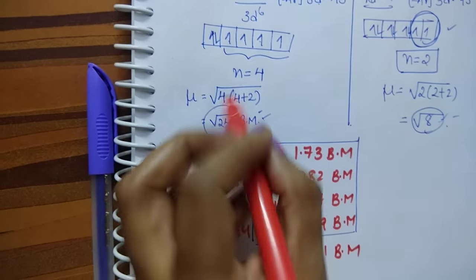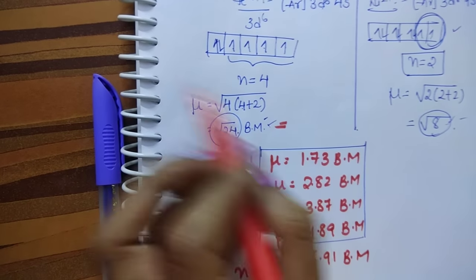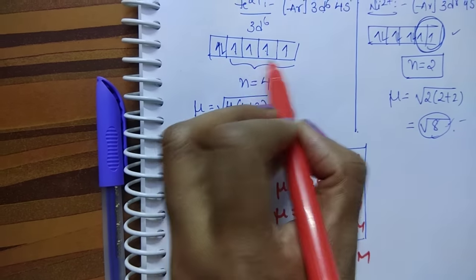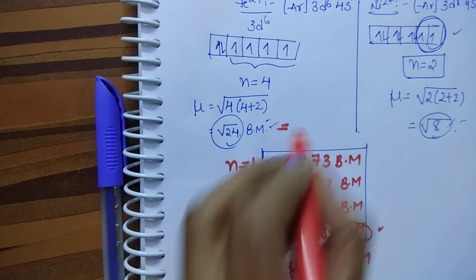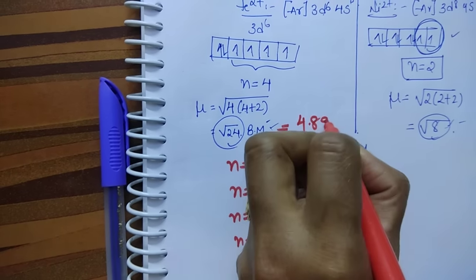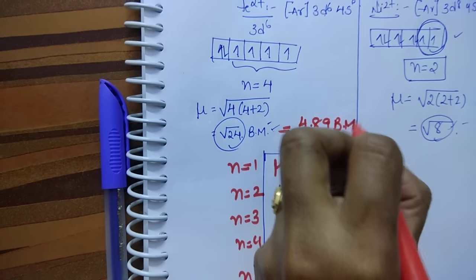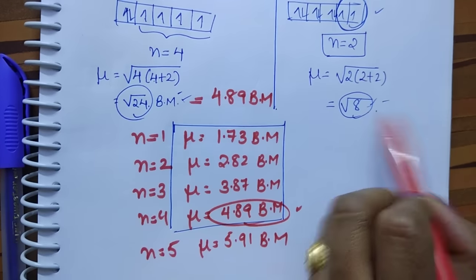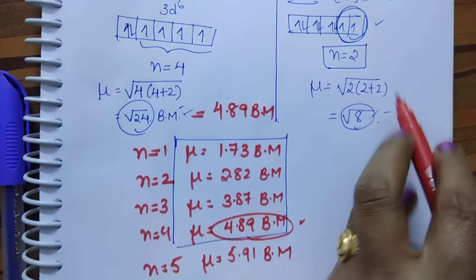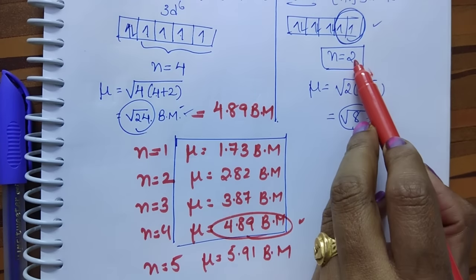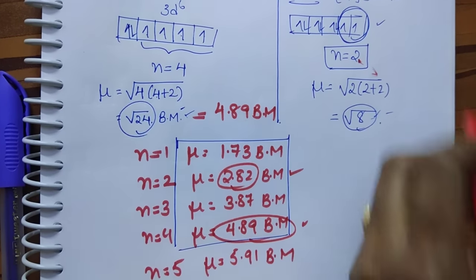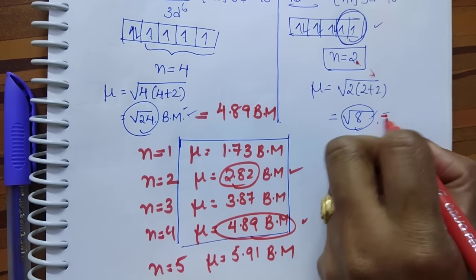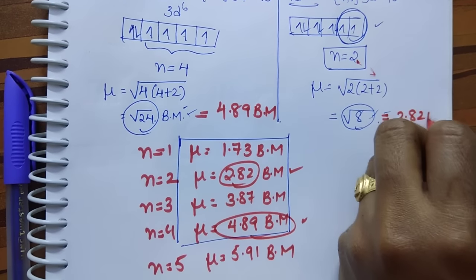See, here you got square root of 24. Number of unpaired electrons is 4, then the value is 4.89 Bohr magnetons. Here square root of 8 - no need to solve this. Number of unpaired electrons is 2, so its magnetic moment is 2.82 Bohr magnetons.